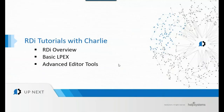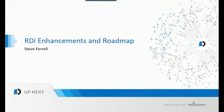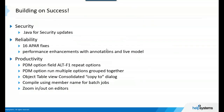Chuck: Susan, that was fantastic — thank you, and Charlie as well. Let's bring in Steve Farrell to talk about enhancements and roadmaps. Steve: What I'm going to talk about is what is coming. You've seen a few things we've added in version 9.6. At Help Systems, we want to focus in different areas: security, reliability, productivity, and currency. From a security standpoint, it's a matter of making sure Java is up to date — we'll do that quarterly, using IBM's pSearch process.